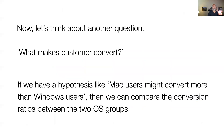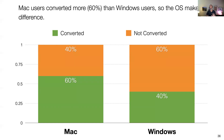Now let's think about another question. What makes customers convert? Let's say you have the hypothesis that Mac users might convert more than Windows users. So we want to evaluate that — you have a gut feeling and then you bring the data and compare those two groups: Mac users and Windows users. What's the percentage of converted customers between those two groups? It turned out 60% of Mac customers converted and Windows only 40%. So from this we can say: it looks like the OS actually matters, what operating system they use matters.